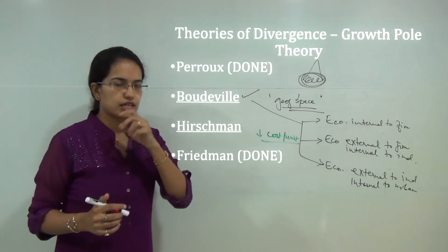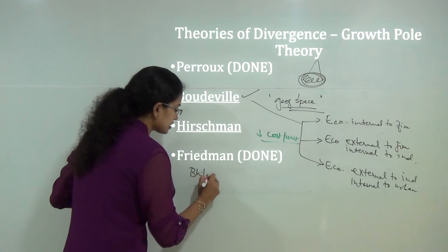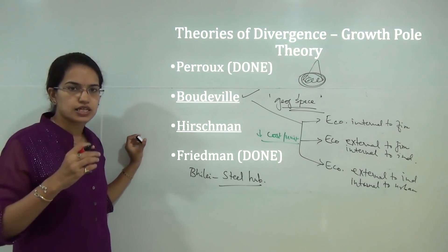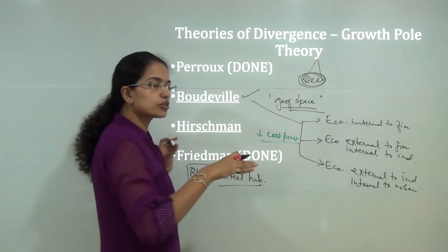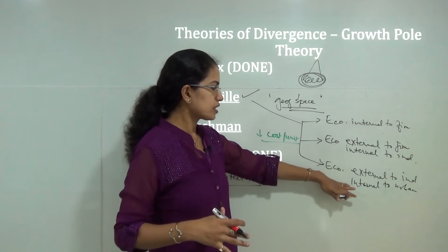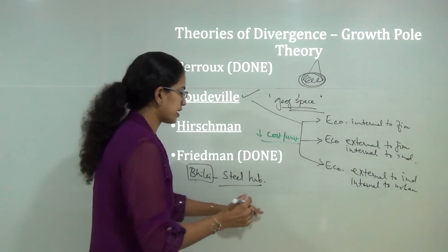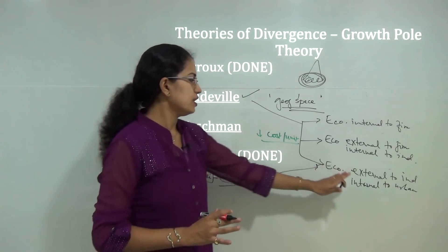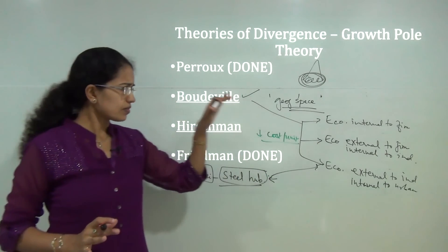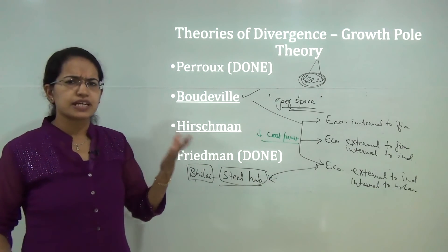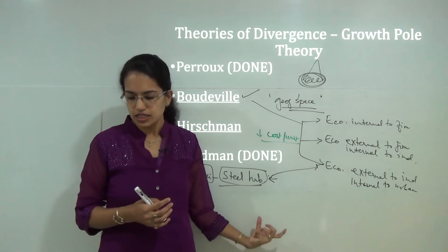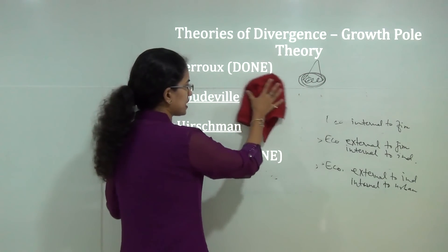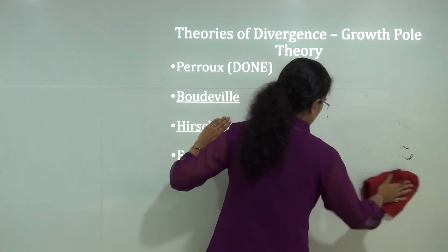For example, Bhilai is a classic example of a steel hub or steel centre, but Bhilai cannot be called a growth pole or growth centre. Why? Because development in and around Bhilai does not sufficiently utilize economies external to the industry and internal to the urban area — it fails to fulfil Boudeville's third condition. His theory was criticized as inapplicable to regional problems due to functional rigidities and the complexity of real geographical space.